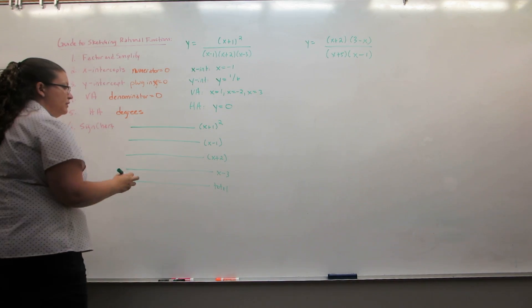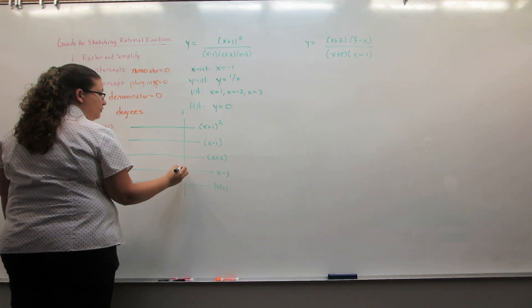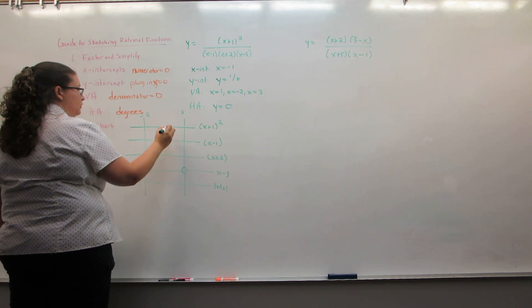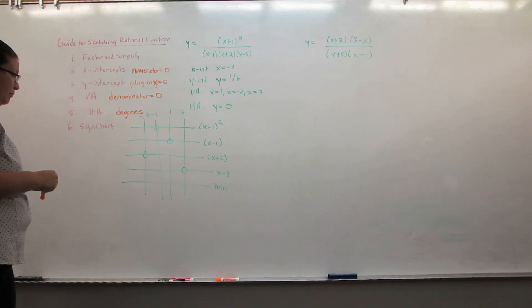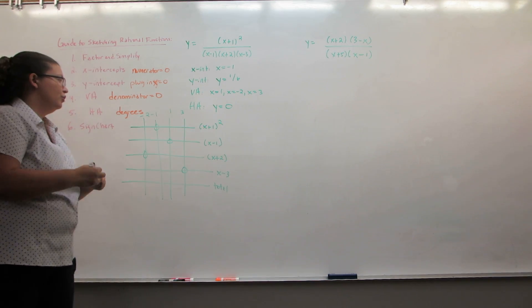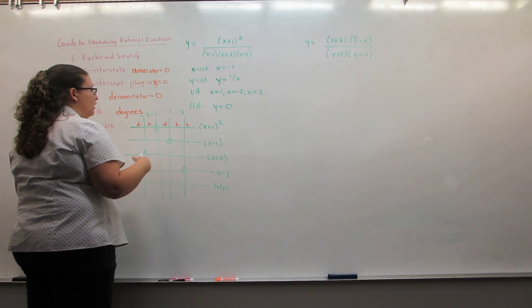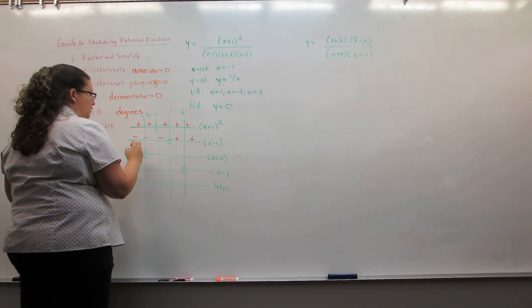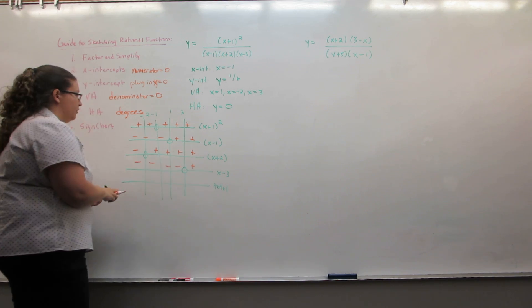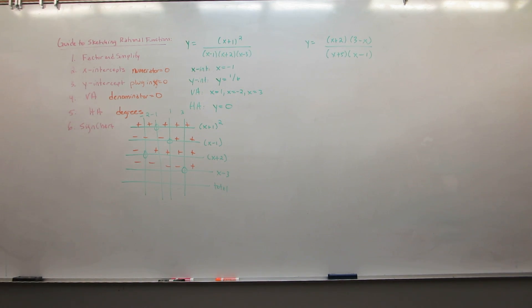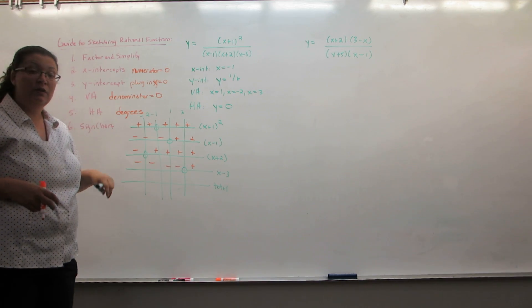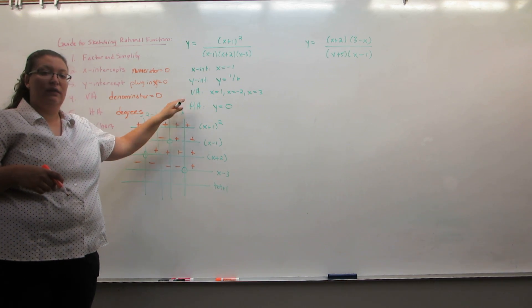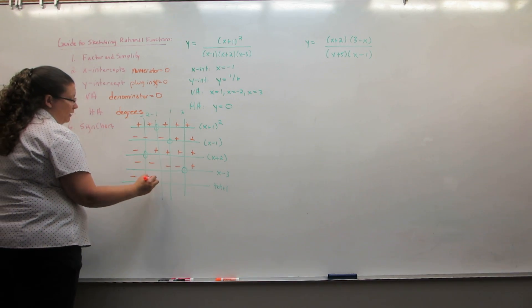We're going to put a vertical line everywhere something is 0: at positive 3, negative 2, positive 1, and negative 1. Now we're going to put our pluses or minuses. Remember that when we have a squared term, everything is plus. Otherwise, it's negative to the left and positive to the right of wherever that line is 0. When using a sign chart to graph a rational expression, I don't actually care about the zeros on the bottom line — some are zeros and some are undefined, but I already have that information in my list. So instead, I'm just going to multiply down my negative signs.